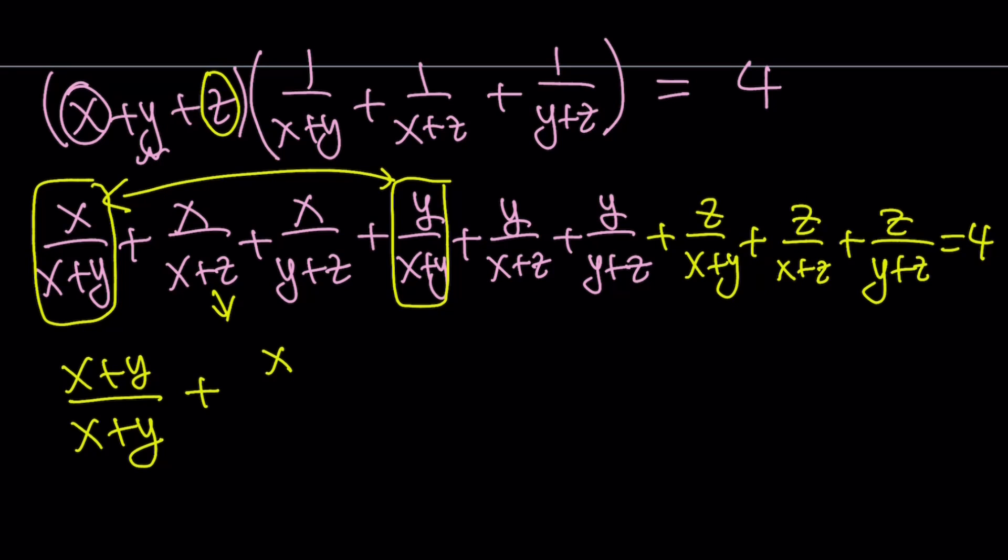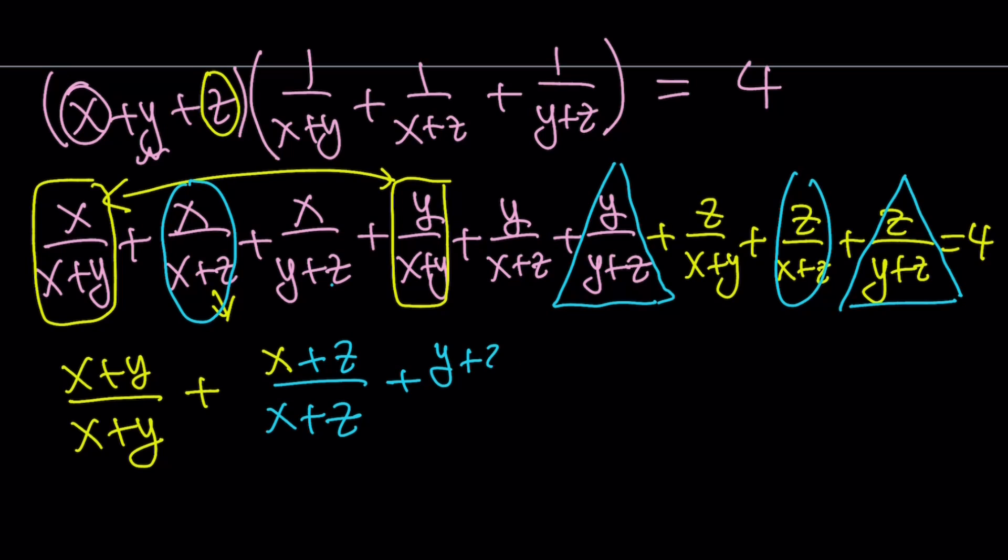Let's use a different color. So I want to take x over x plus z and combine it with z over x plus z. And now what else can I do? I don't want to take x over y plus z because I can't really pair it with something meaningful. But rather, I want to take y over y plus z. And what can I combine that with? z over y plus z. And their sum is going to be y plus z over y plus z.